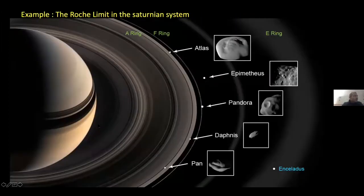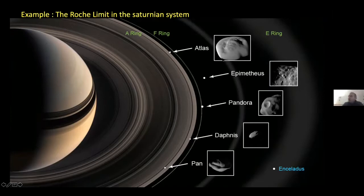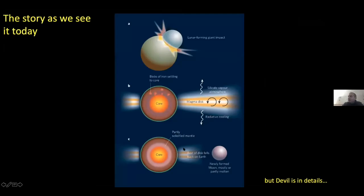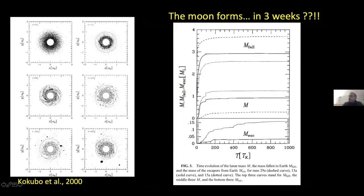This is consistent with the concept of the Roche limit — the region beyond which satellites or aggregates can form around a planet. As an analogy, in the Saturnian system, below the Roche limit you have rings (like Saturn's rings in Cassini images), and beyond the Roche limit you have satellites. Similarly, for the proto-lunar disk, below the Roche limit there is a disk, and beyond it the proto-Moon forms. Simulations by Kokubo et al. around 2000 show the disk spreading and the proto-Moon appearing beyond the Roche limit within about 200 orbits — roughly three weeks in real time.